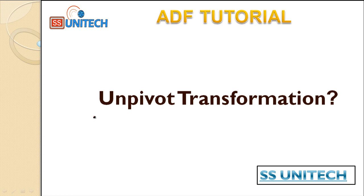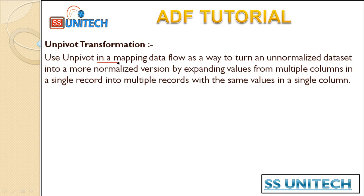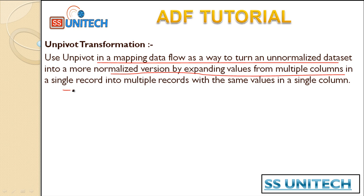Use unpivot in a mapping data flow as a way to turn an unnormalized dataset into a more normalized version, by expanding values from multiple columns into multiple records with the same value in a single column. We will be picking the column names from multiple columns and keeping those into a single column — this is a rotation of the table, and it is the reverse of the pivot transformation.